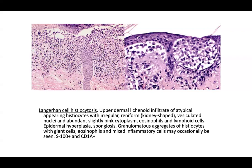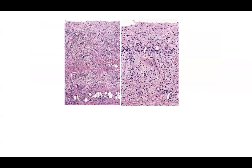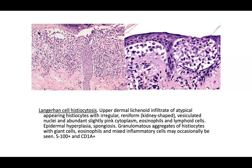Granulomatous aggregates of histiocytes with or without giant cells, eosinophils, and mixed inflammatory cells can be seen. Key stains are S100 and CD1a. I'll often add CD68 to show normal histiocytes in inflammatory processes. If most cells are S100 and CD1a positive, raise the red flag. On exams, they may show a picture resembling seborrheic dermatitis with Langerhans cell microabscesses — not seen in classic seborrheic dermatitis, which shows spongiotic and psoriasiform changes.